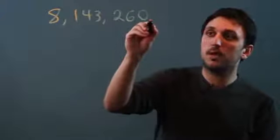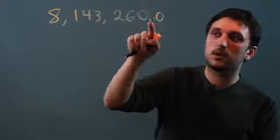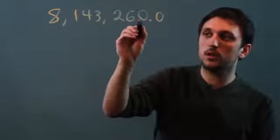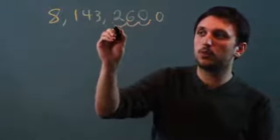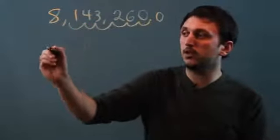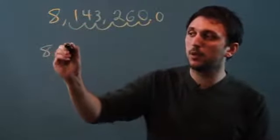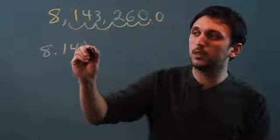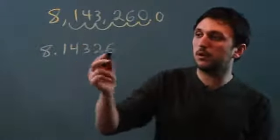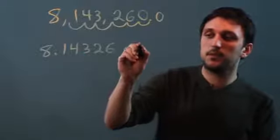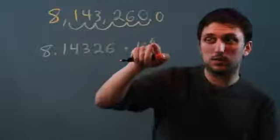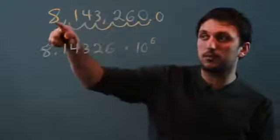So in this case, right now the decimal is over here, and we want it to be over here. So we have to move it over 1, 2, 3, 4, 5, 6 places. So we have 8.14326, and you don't have to say the zero, times 10 to the sixth power. Now it's the sixth because of the six places moved over.